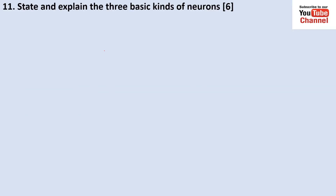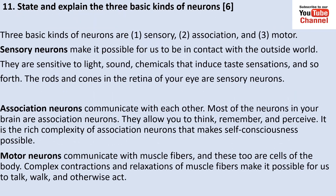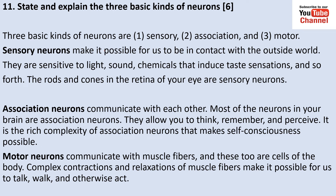State and explain the three basic kinds of neurons. The three are sensory, association, and motor neurons. Sensory neurons make it possible for us to be in contact with the outside world — they are sensitive to light, sound, and chemicals that induce taste sensations. Association neurons communicate with each other; most neurons in our brain are association neurons, allowing us to think, remember, and perceive. Motor neurons communicate with muscle fibers, and complex contractions and relaxations of these muscle fibers make it possible for us to walk, talk, act, and do many things.